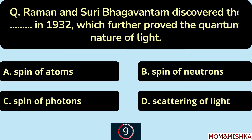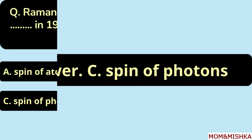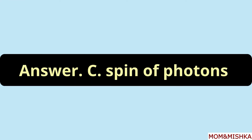Raman and Suri Bhagwanatham discovered the blank in 1932, which further proved the quantum nature of light. Spin of photons, Option C.